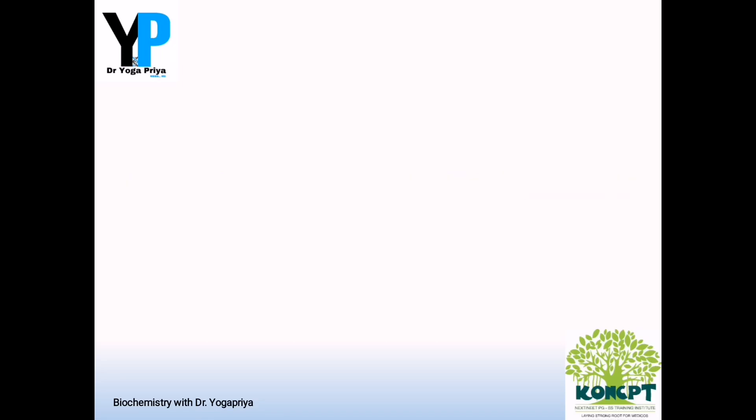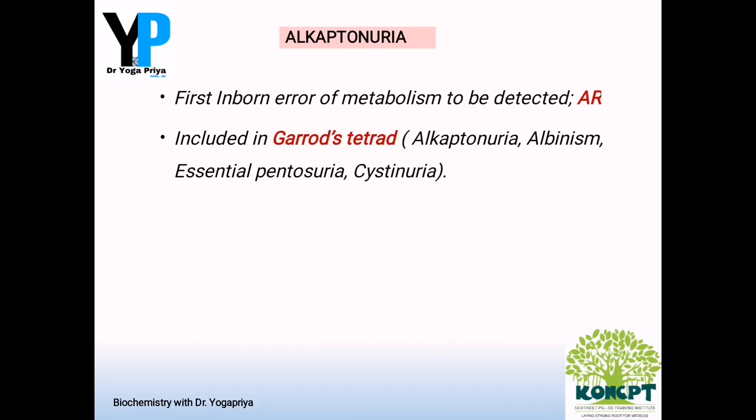What is alkaptonuria? It is the first detected inborn error of metabolism and it is always inherited in an autosomal recessive pattern. It is one among Garrod's tetrad, which is a high-yielding point. This includes alkaptonuria, albinism, essential pentosuria, and cystinuria.